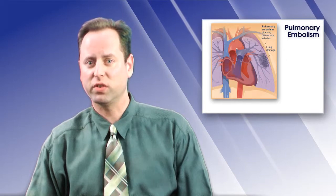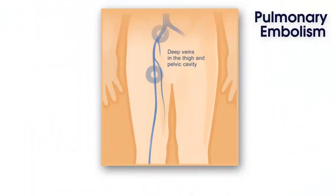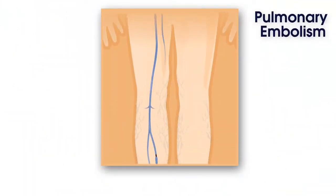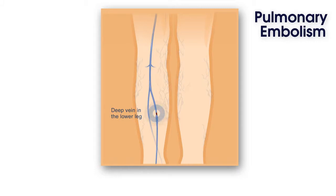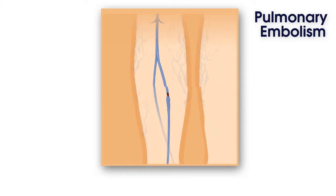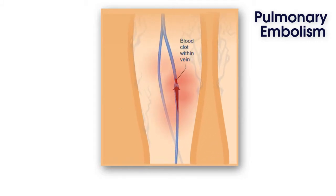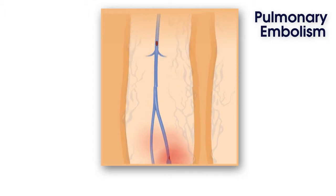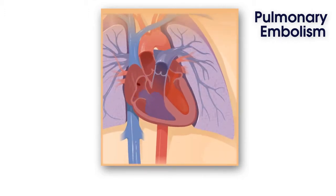The blood clots usually originate from the lower extremities, especially from the deep veins of the legs, leading to a condition called deep vein thrombosis, commonly referred to as a DVT. However, blood clots can travel to the lungs through the bloodstream from any part of the body and even originate in the lungs themselves.